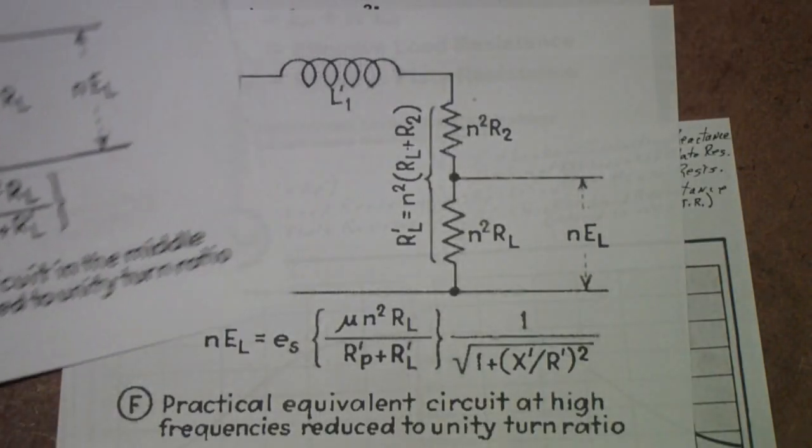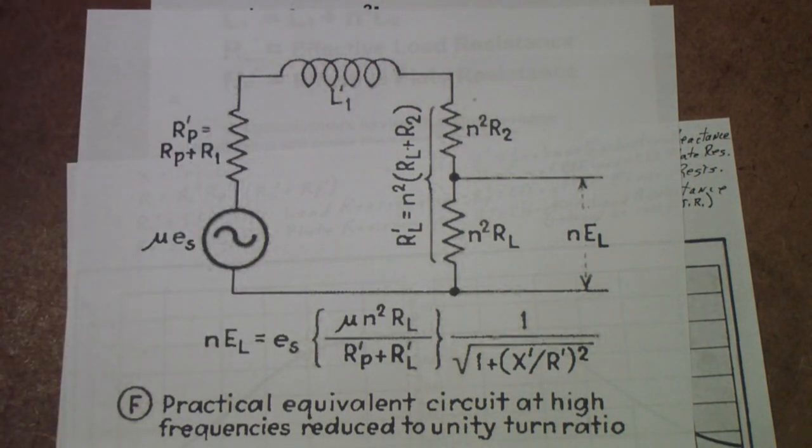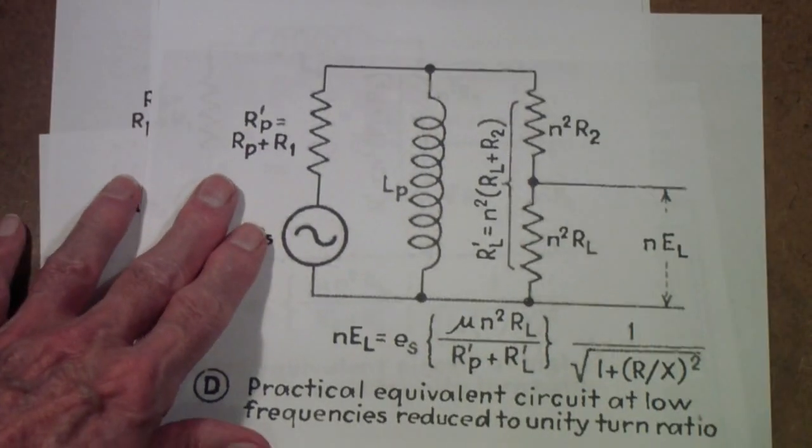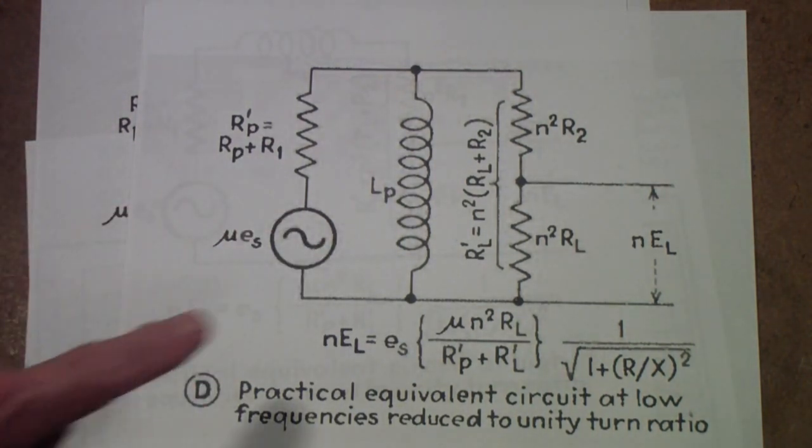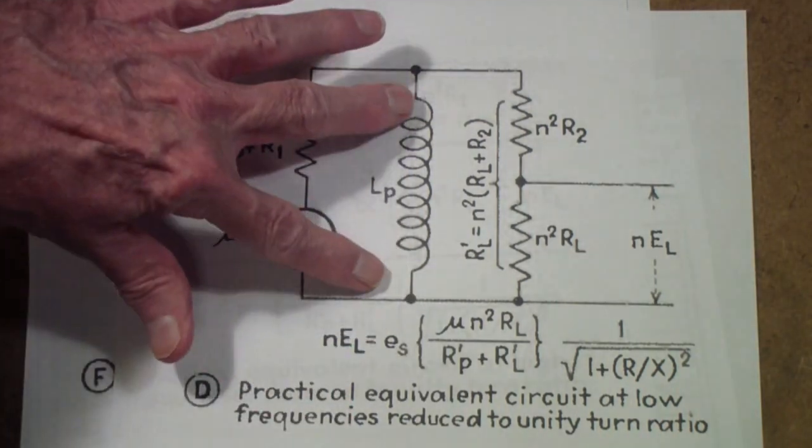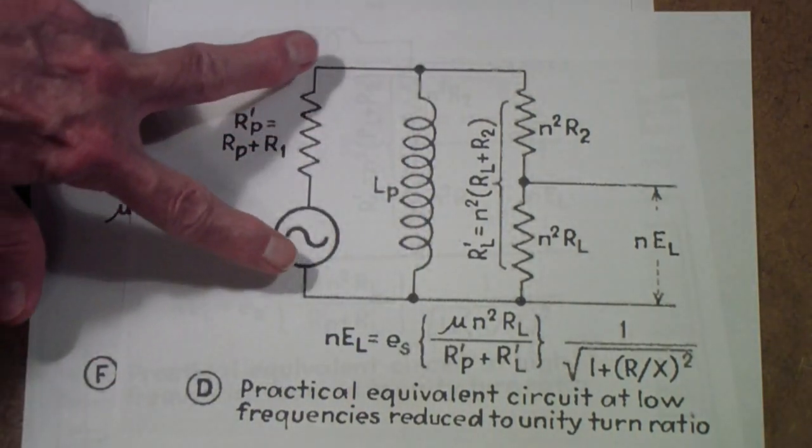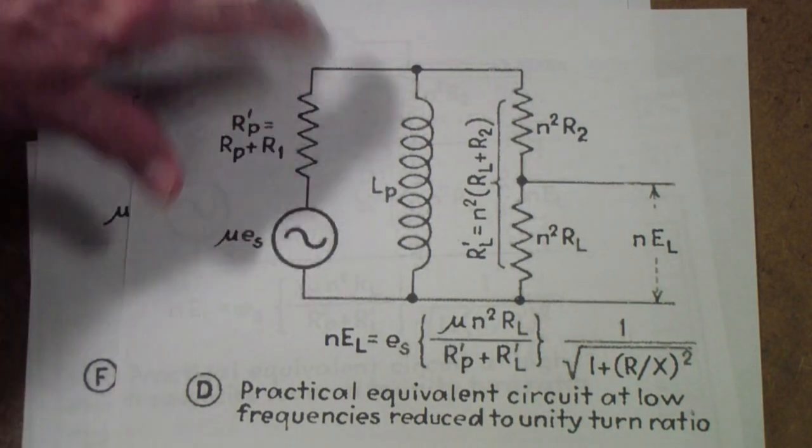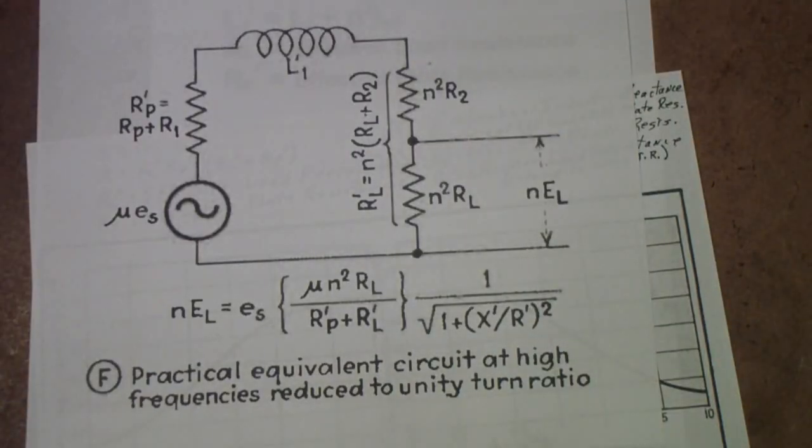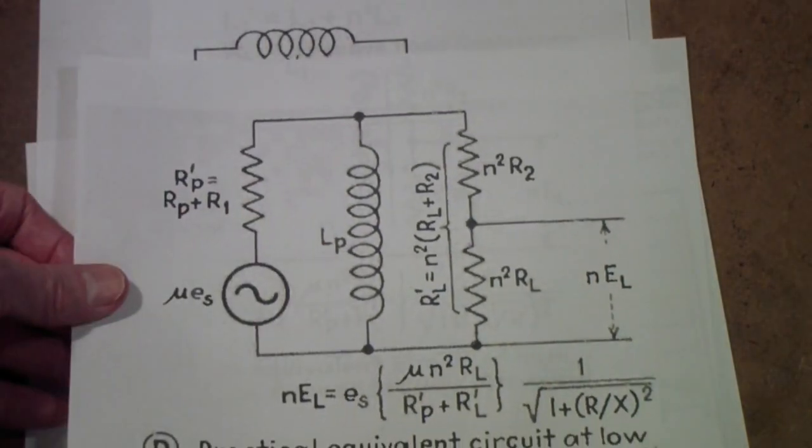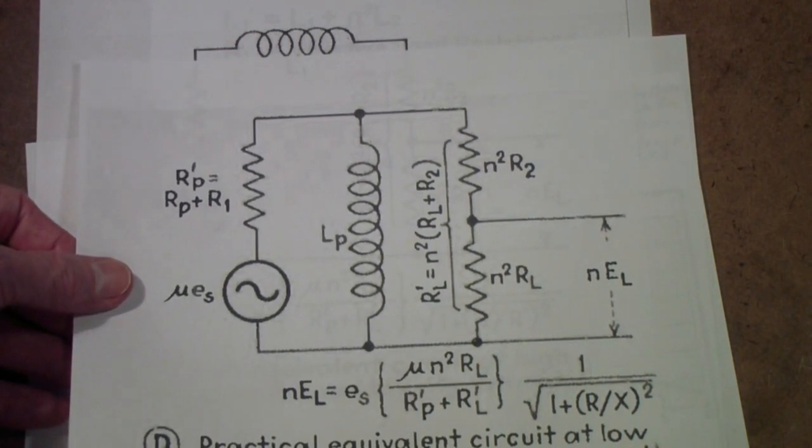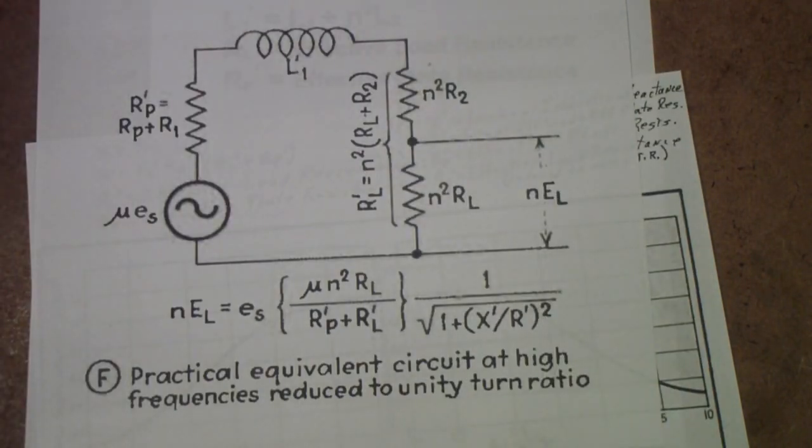Then, this is the effective circuit at low frequencies. Notice that in this, you have an inductor that shunts the output of the tube. So, unlike this one, where the output of the tube flows through the leakage inductance and then through just resistors, in this, the primary inductance is a shunt. That's at low frequencies.